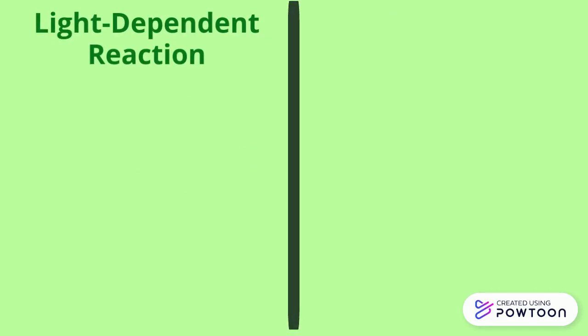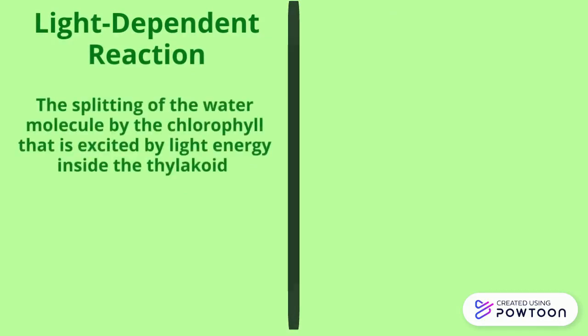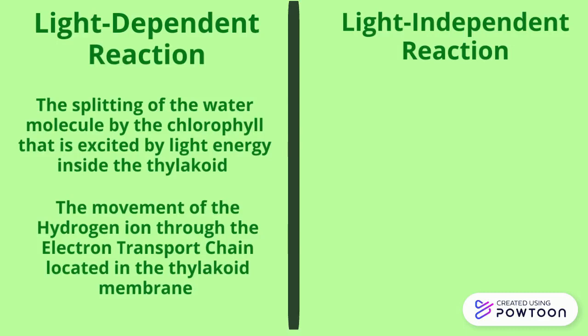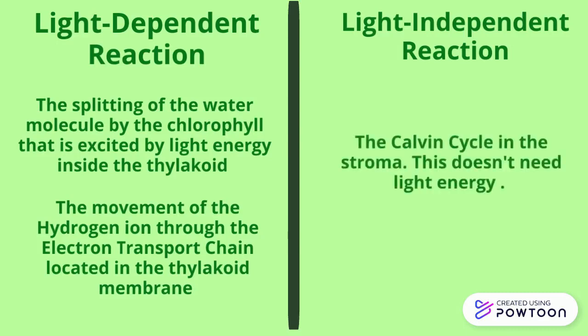Photosynthesis can be divided into two types of reactions. The first, the light-dependent reaction, occurs in the thylakoid and the thylakoid membrane, when the chlorophyll splits apart the water molecules and moves the hydrogen ions through the electron transport chain. The second is the light-independent reaction, which is the Calvin cycle in the stroma.